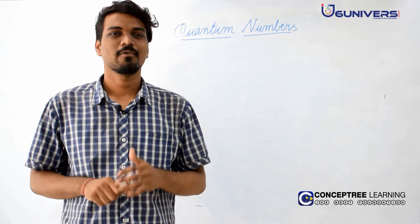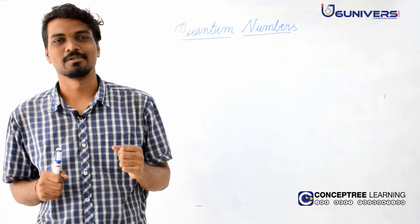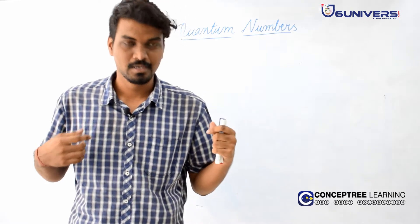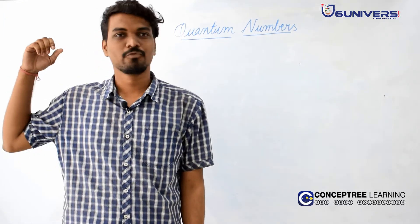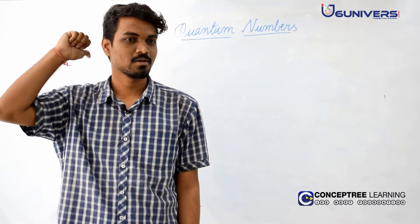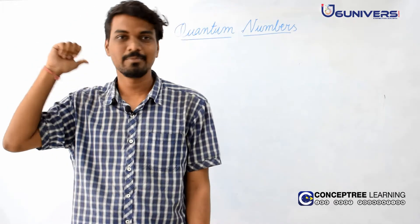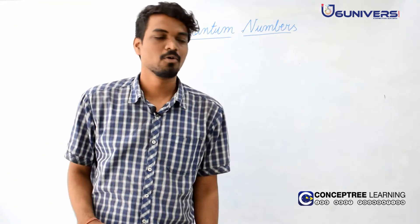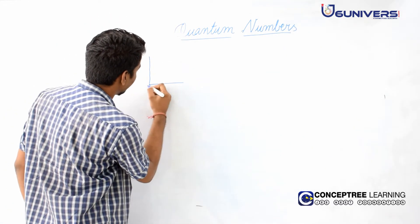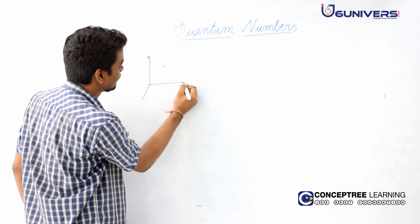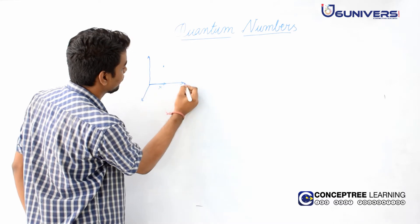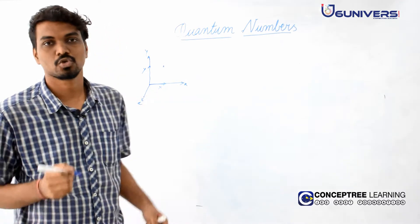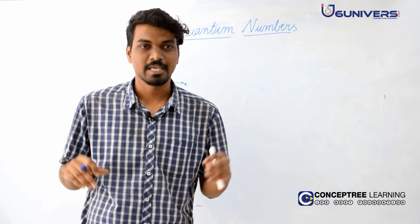Today our class will be on quantum numbers. What are quantum numbers? Obviously there are some numbers, but what do they represent? If you take an example like me — I am standing in a three-dimensional space, a few meters from my left wall, a few centimeters from my back wall, and a few meters from the roof. To get my position in a three-dimensional space, I require my x coordinate, my y coordinate, and my z coordinate. I require three coordinates to identify my location.